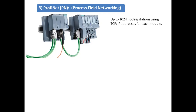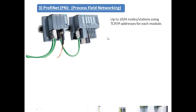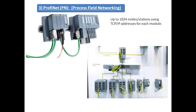For Profinet we use the RJ-45 connector. Here is one example with M20 and some switches — also called extension modules — you can extend the distance or configure multiple devices on a single network using these switches, also known as Scalance switches. Multiple cables and multiple modules can be configured on them. The maximum baud rate using RJ-45 is 100 Mbps, allowing longer distance communication.